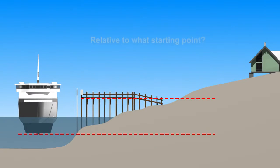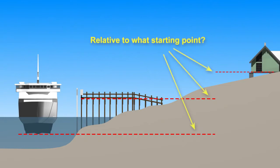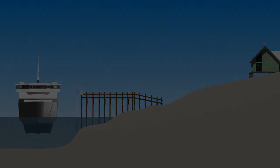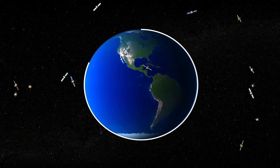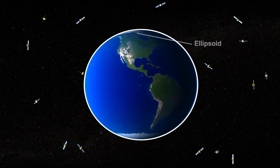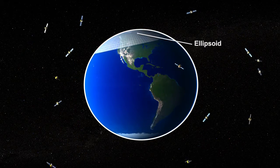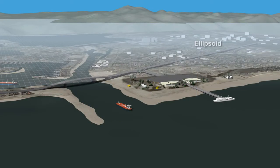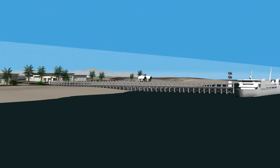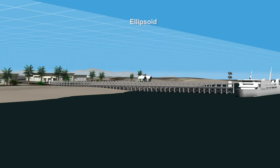In order to align elevation data from various sources, we need to pick a common starting point. The most commonly used reference surface, or datum, is an ellipsoid — an idealized representation of Earth's shape. Because Earth is not smooth, the ellipsoid may lie above or below Earth's surface at any given location. The ellipsoid is the basis for satellite navigation systems, such as the U.S. Global Positioning System, or GPS.